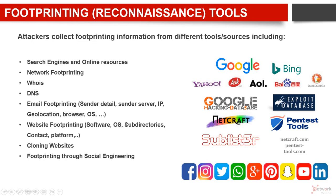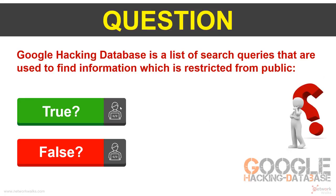Let me ask you a quick question now. Please try to answer in the comments below. Google Hacking Database is a list of search queries that are used to find information which is restricted from public. Is it true or false? GHDB is a powerful footprinting tool. So the search queries used on GHDB — are they getting information from publicly available sources or from private sources? Write your answer in true or false in the comments below.